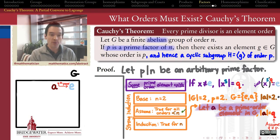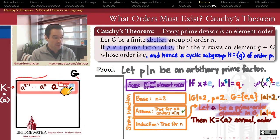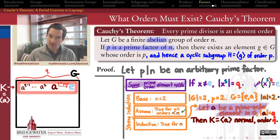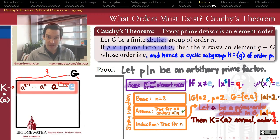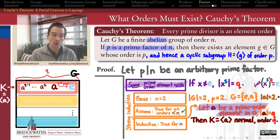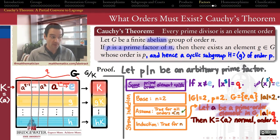Consider the cyclic subgroup K generated by A; it has Q elements since Q is the order of A. Because G is abelian, every subgroup is automatically normal, so K is a normal subgroup of G. That means we can form the factor group G mod K. The order of G mod K is N divided by Q — that's the number of cosets of K in G.